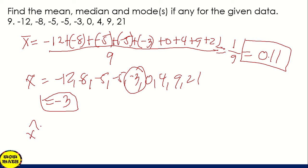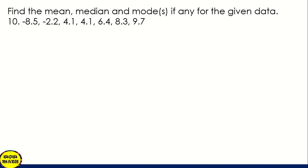And mode? Since kitang-kita natin na meron tayong dalawang negative 5, that will be our mode, negative 5. This is an example of unimodal. So yung mean natin is 0.11, the median is negative 3, mode is negative 5.